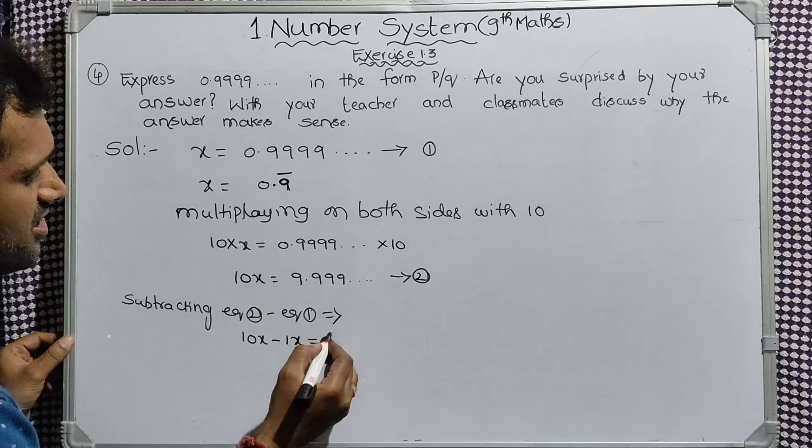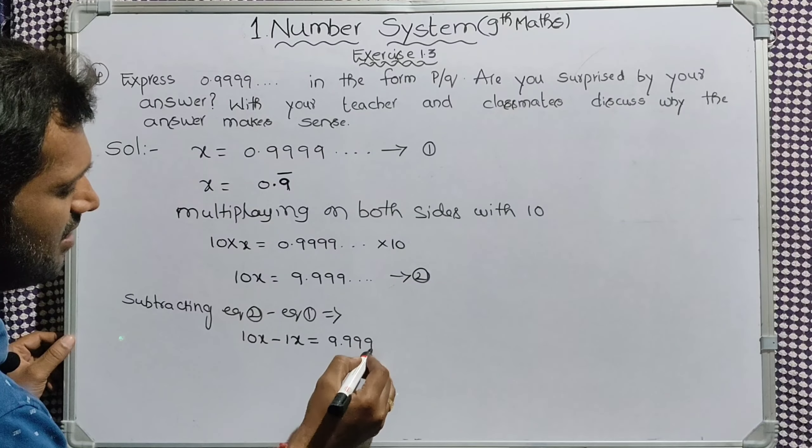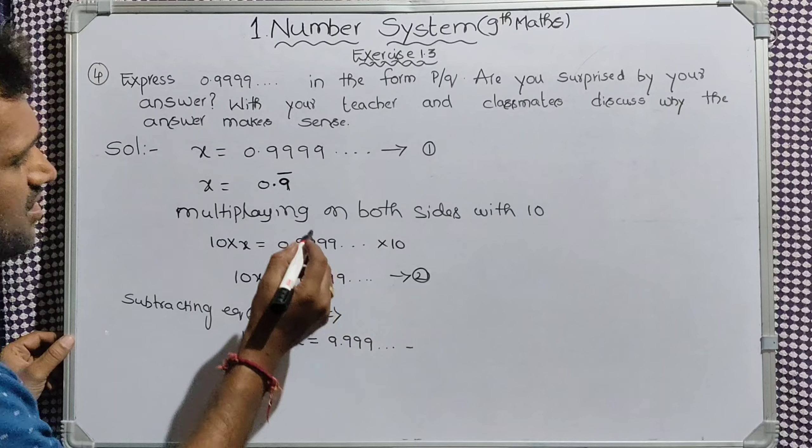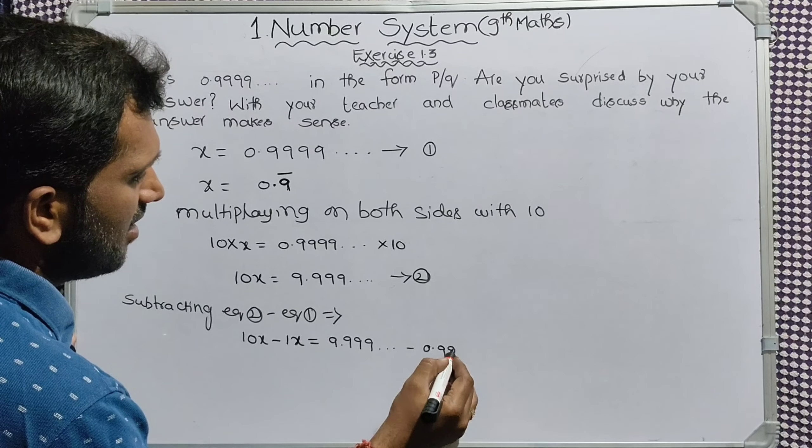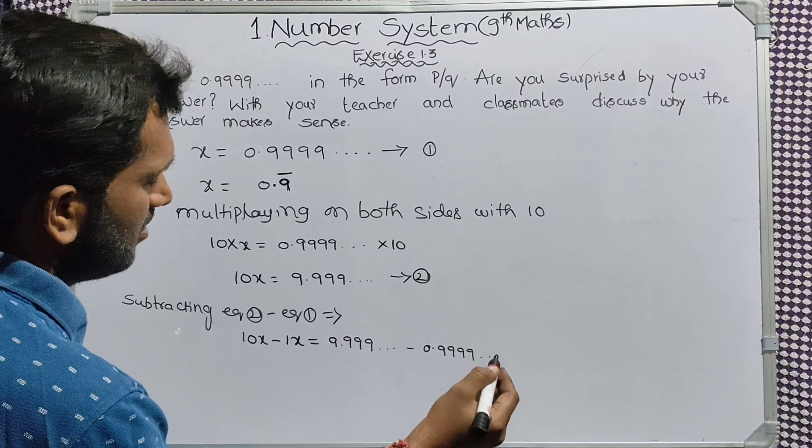Equation 2 RHS: 9.999 and so on minus equation 1 RHS: 0.9999 and so on.